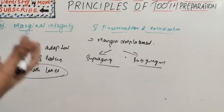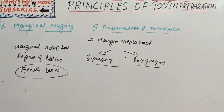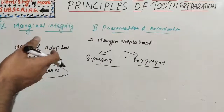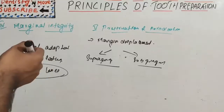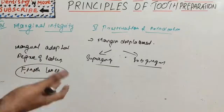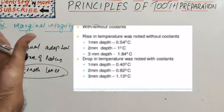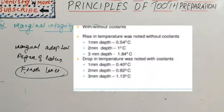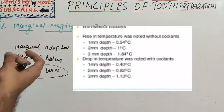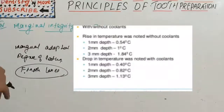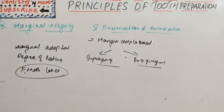To prevent damage during tooth preparation: protect adjacent teeth using a metal matrix band, leaving a slight lip or fin of proximal enamel. Protect soft tissue by careful retraction of lips and cheeks, and care to protect the tongue when preparing lingual surfaces of mandibular molars. Regarding pulp protection, consider the temperature rise during preparation. Without coolant: 0.54°C at 1 mm depth, 1°C at 2 mm, and 1.84°C at 3 mm. With coolant, values are comparatively lower: 0.40°C, 0.82°C, and 1.13°C respectively.